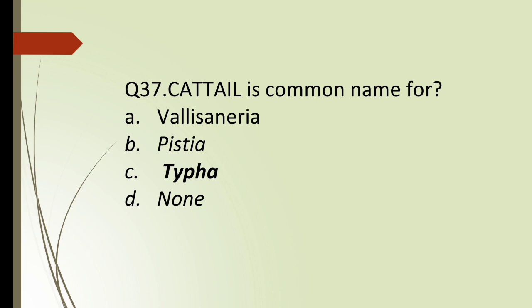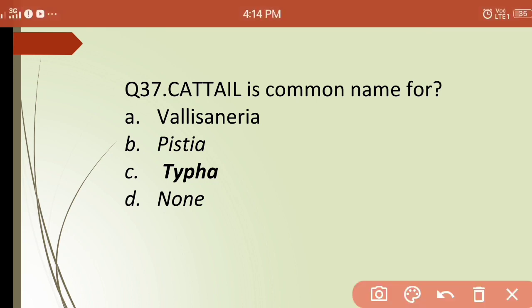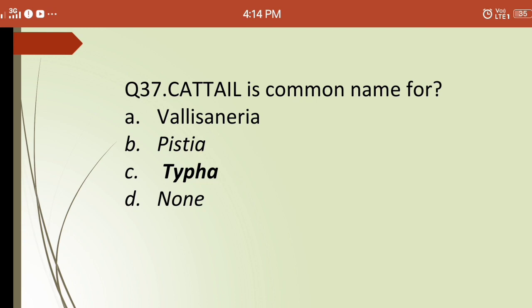Thirty-seventh question: cattail is the common name of? Options are: (a) Vallisneria, (b) Pistia, (c) Typha, (d) none. The correct answer is (c) Typha — Typha is called cattail. Vallisneria is known as tape grass, not cattail.